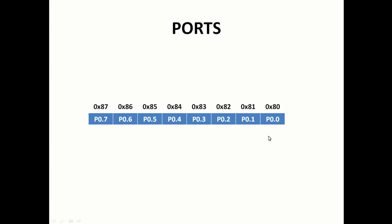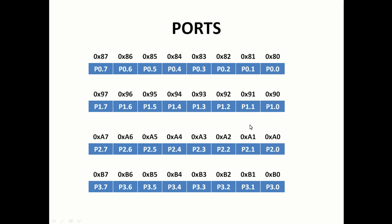So if you want to write data to a particular bit in Port 0 — for example, writing 1 to P0.3 — you go to address 0x83 and write 1 to it. All other ports follow the same pattern: Port 1 runs from 0x90 to 0x97, Port 2 from 0xA0 to 0xA7, and Port 3 from 0xB0 to 0xB7. These are the basic port structures of the AT89S52 microcontroller. I hope you understood all the pin notes, the basic required circuit, and the addresses of all port pins. See you in the next lecture — thanks for watching.